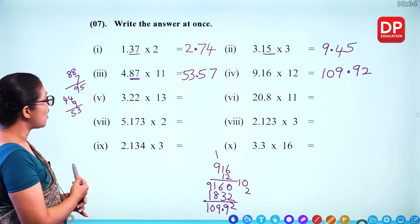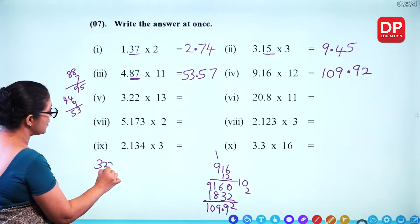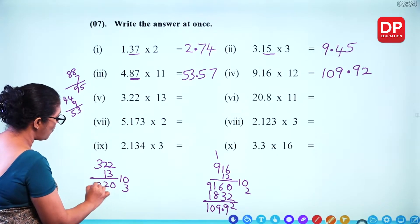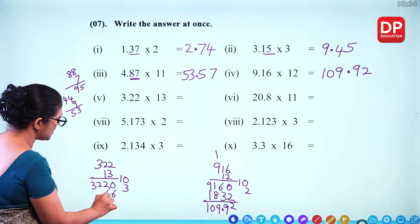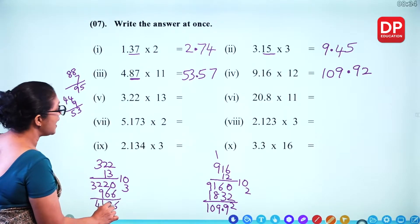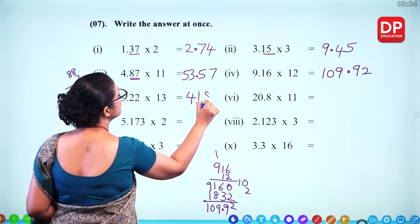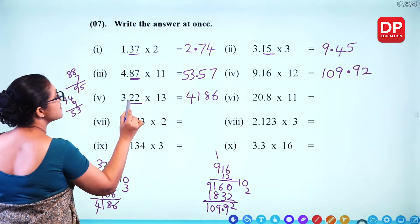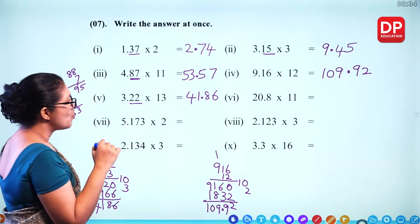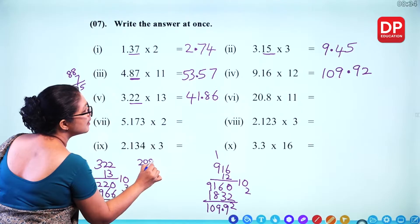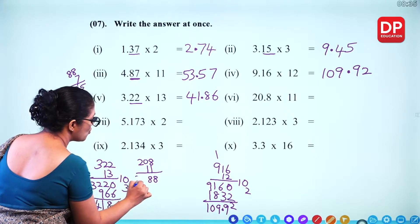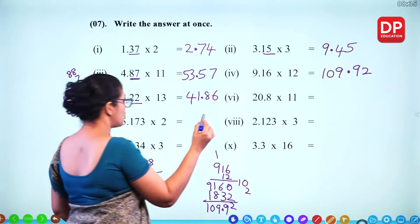For 3.22 times 13: 322 multiplied by 13. Split into 10 and 3. 3 times 2 is 6, 3 times 2 is 6, 3 times 3 is 9. When you add it together, you get 4186. With 2 decimal places, the decimal point goes here giving 41.86.